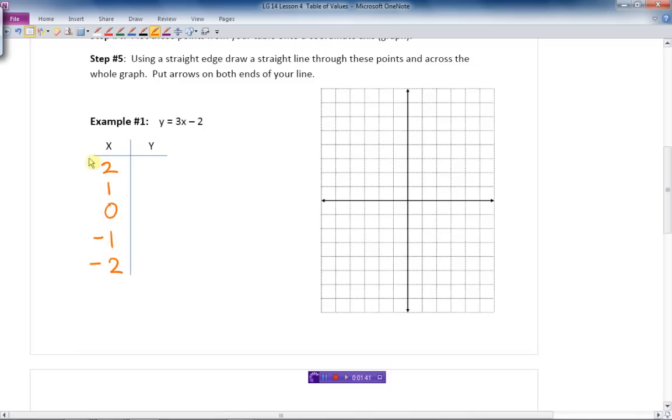I am going to substitute these one at a time. So I am going to put 2. So Y equals 3 times 2, put 2 in for the X. I am going to triple it and subtract 2. So 3 times 2 is 6 minus 2 is 4. So the Y value of that is 4.